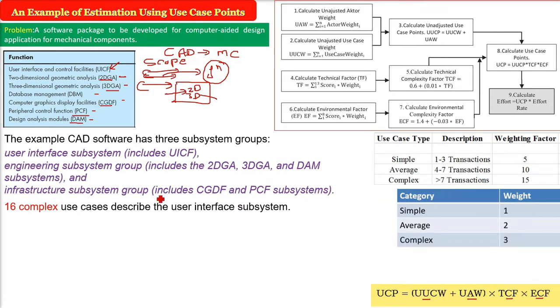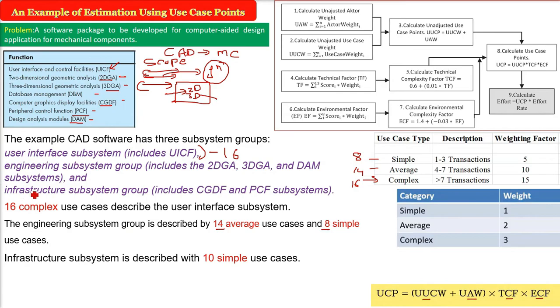So the computation starts from here. Just assume that we know the software, we know the values now. So we have defined the use case now. 16 complex use cases describe the user interface subsystem. The engineering subsystem group is described by 14 average use cases and 8 simple use cases. I am talking only about use cases here. So we have 14 average, 16 complex and 8 simple use cases.